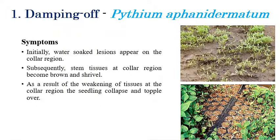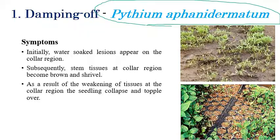The first disease is damping off, which is caused by Pythium aphanidermatum. This disease will be very problematic especially during the production of nursery, not only in chillies but also for other crop plants. So for production especially in nurseries, this is a major concern.